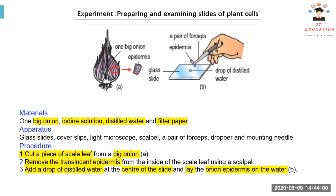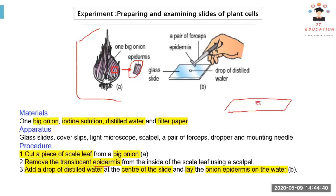Next will be the experiment — we have two experiments. This one will be preparing and examining a slide of the plant cell. What we do is we cut off the epidermis, then we remove the outer layer, the translucent epidermis. After that, we have a glass slide and we put a drop of water in with a dropper, then we place our epidermis on it.